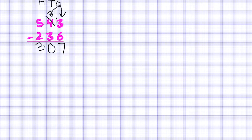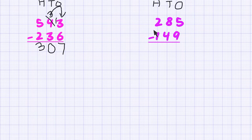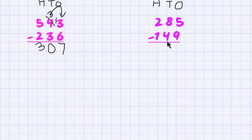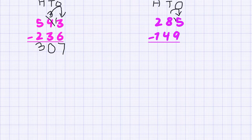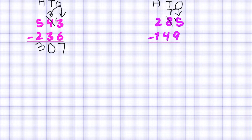Let's do our second calculation: 285 minus 149. We have written all the ones in a straight line, the tens in a straight line, and the hundreds in a straight line. We start at the ones: 5 minus 9 — the same problem. We can't take away a larger number from the smaller number. So we go to our tens friend and borrow a 10. Now we have 15 here, and our tens friend no longer has 8 — he has only 7.